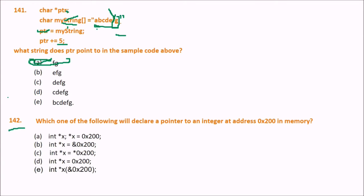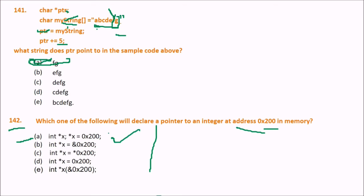Next: which of the following will declare a pointer to an integer at address 0x200? The answer is A. We have int *x, and then *x = 0x200. That declaration and assignment is correct.